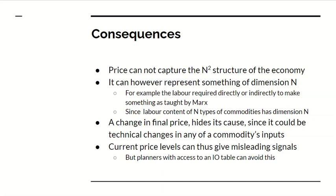Why is this information loss important? It's because a change in final price hides its cause. It could be due to a technical change in any one of the many inputs used in that industry. Therefore current price levels can give misleading signals. But planners with access to an IO table can directly compute what should be done — they can directly compute what the correct valuations of things are.